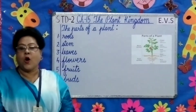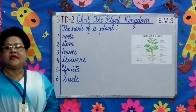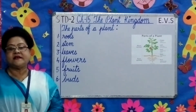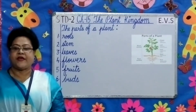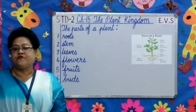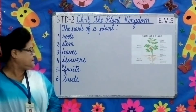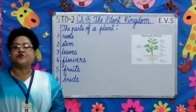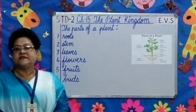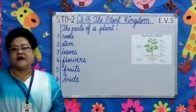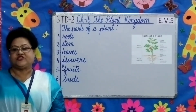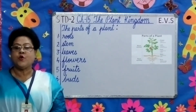The roots hold the plant firmly in the soil. The stem makes the plant stand straight. The leaves prepare the food for the whole plant. The flowers change into fruits. The fruits have seeds inside them. A seed has a baby plant inside it, which grows into a new plant.